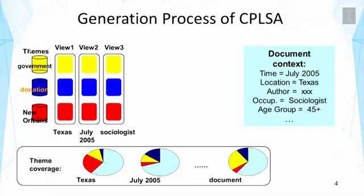We don't have time to introduce this model in detail, but there are references you can look into for more detail. I want to explain the high-level ideas more thoroughly — particularly the generation process of text data that has context associated in such a model. We can assume there are multiple topics; for example, some topics might represent themes like government response, donation, or the city of New Orleans.